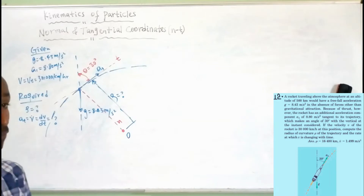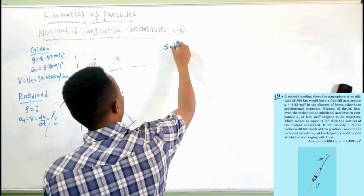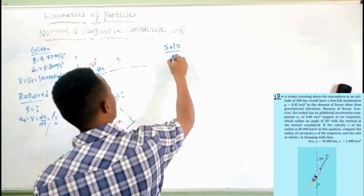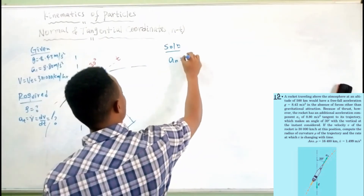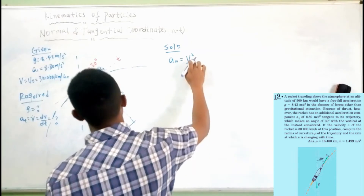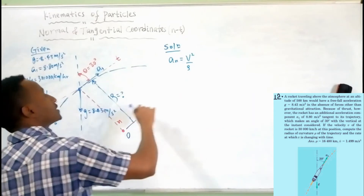From the given information, we will find the radius of curvature and the tangential acceleration. Solution: we know that the normal acceleration is equal to v squared over the radius of curvature. Here, v is the tangential velocity.